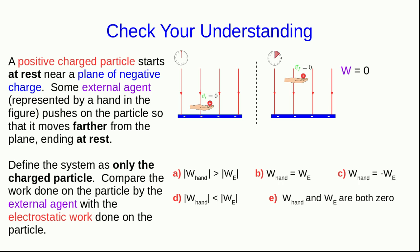And so the work done on the system is zero. That work is two different works, one due to the hand and the other due to the electrostatic forces, and so we can say that the work by the hand plus the electrostatic work is zero, and that tells us that the work done by the hand is equal to the negative of the electrostatic work.